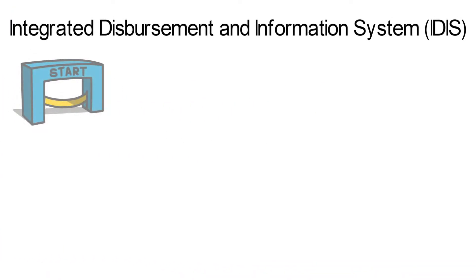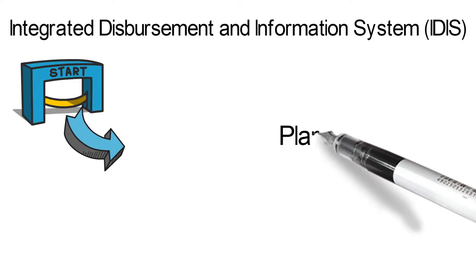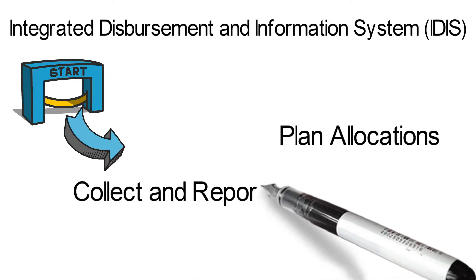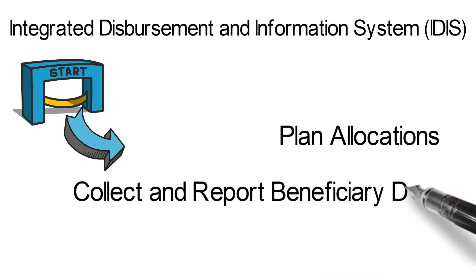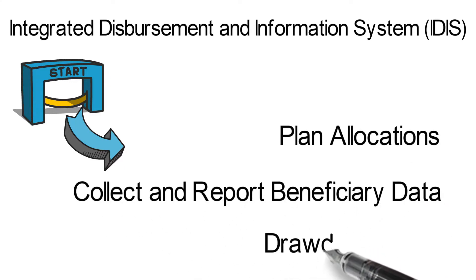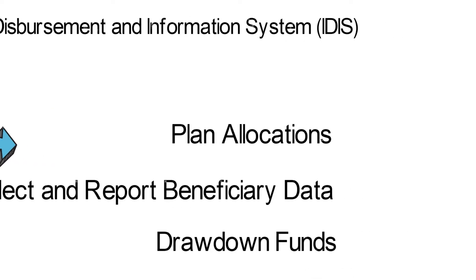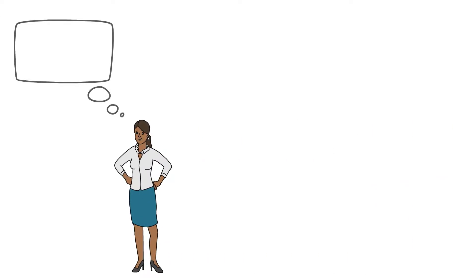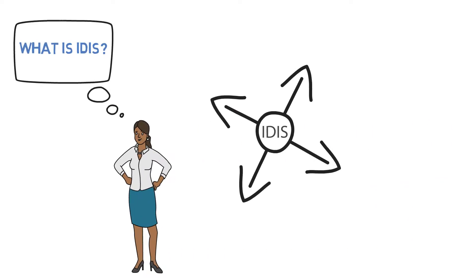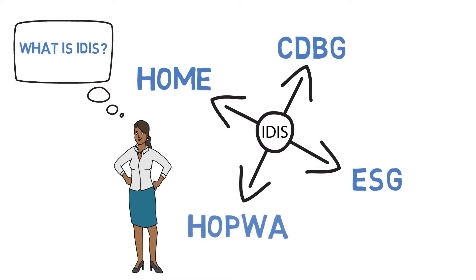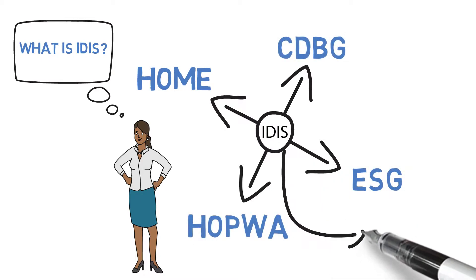The Integrated Disbursement and Information System was created as a way for grantees to plan for how they would spend their HUD allocations, collect and report beneficiary data, and allow for the drawdown of funds. IDIS supports HUD's CPD-funded formula grant programs, which includes HOME, CDBG, ESG, HOPWA, and HTF.